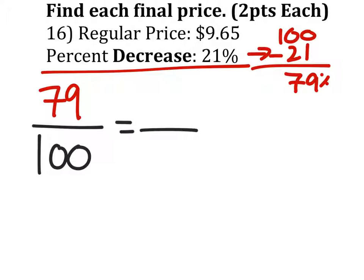Now the 79% is the new price, which we'll go ahead and solve for. We don't know what that value is. So 100% of the price will continue to be in the denominator, which is the regular price, $9.65.